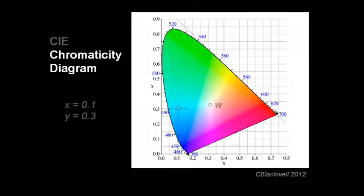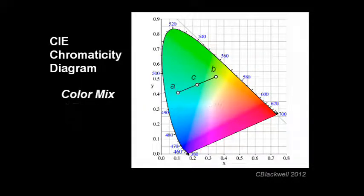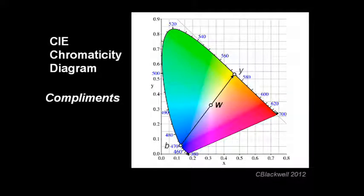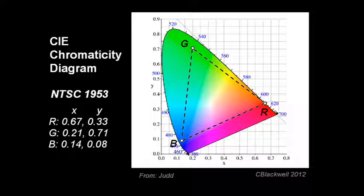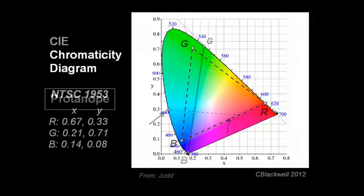On its face, it is a way of displaying and quantifying the entire range or gamut of colors we are able to see. It is a powerful tool that tells us, for example, what color will result if we mix two different colors. It tells us that blue and yellow are complements, and if you mix them, the result is white. It can show the range of colors that a computer screen or a television can display if you specify the primary screen colors.